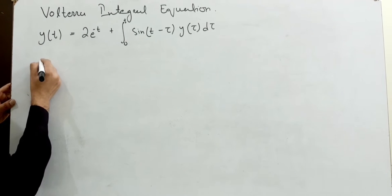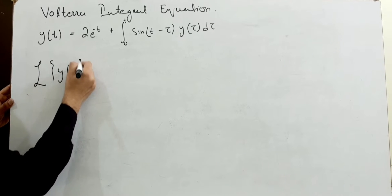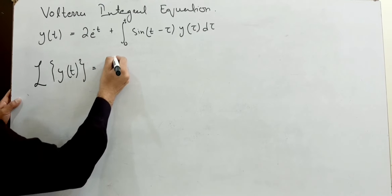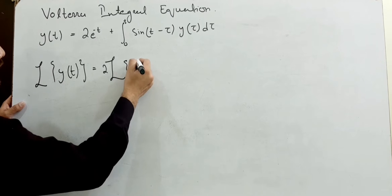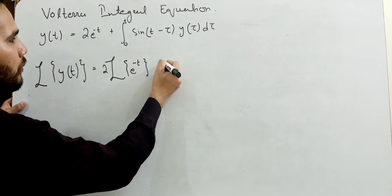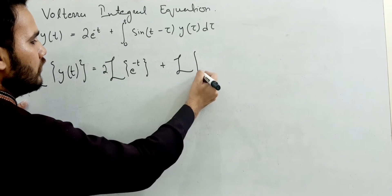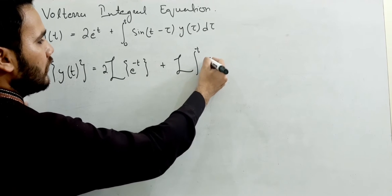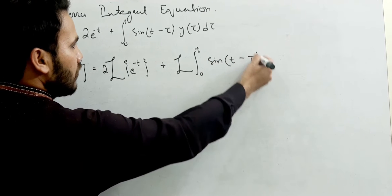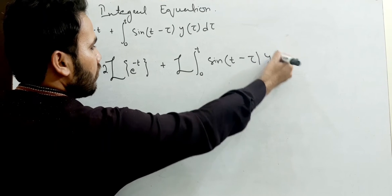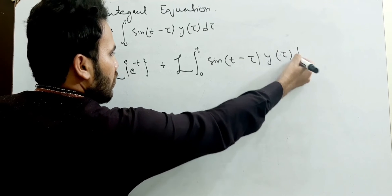Applying Laplace transformation: the Laplace of y(t) equals — using the linearity property — I'm taking to the right-hand side: e to the power minus t, plus the Laplace of the integral from 0 to t of sin(t minus tau) times y(tau) d-tau.